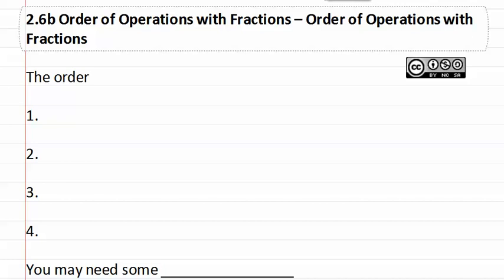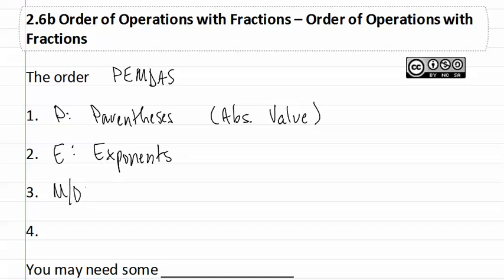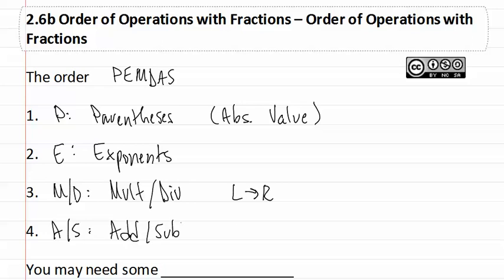2.6b: order of operations with fractions. Remember the order can be remembered with PEMDAS, or 'Please Excuse My Dear Aunt Sally,' where P is parentheses — but it can also be an absolute value. E is for exponents, M/D is for multiply and divide, which goes from left to right. And A and S are for add and subtract, which also goes left to right. When doing order of operations with fractions, you're probably going to need some scratch paper.